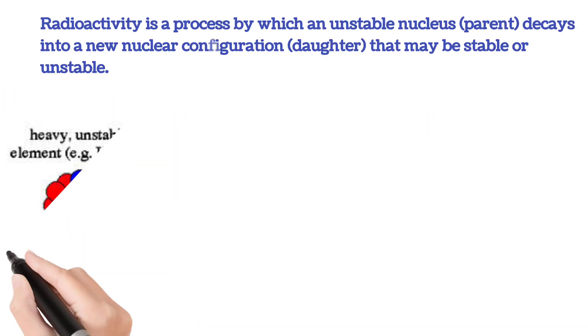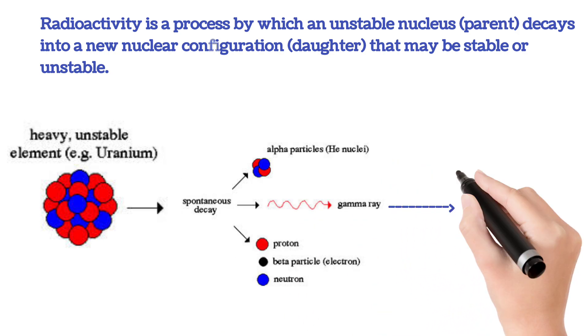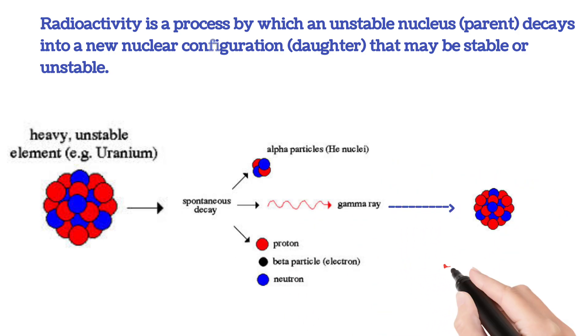Radioactivity is a process by which an unstable nucleus decays into a new nuclear configuration that may be stable or unstable.